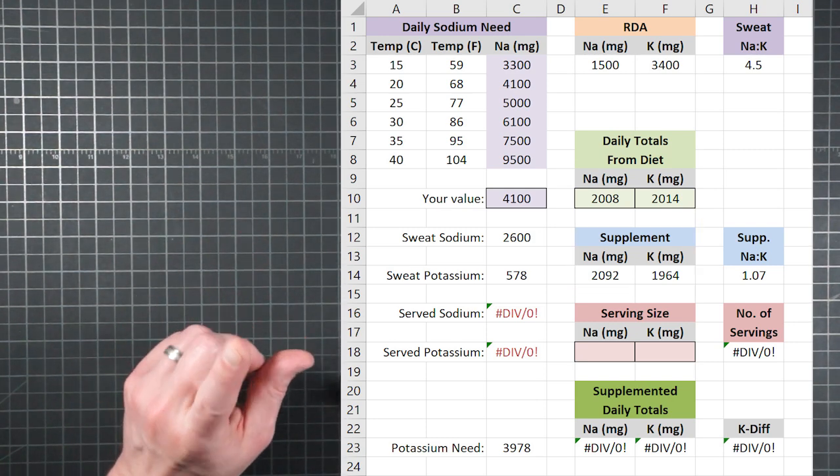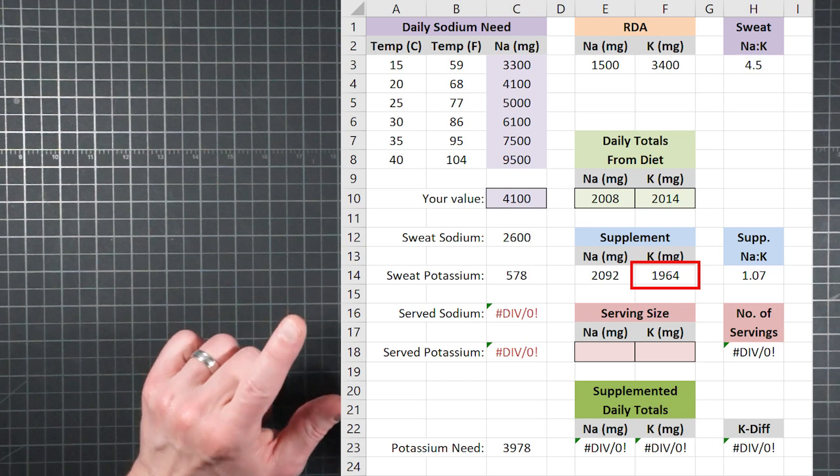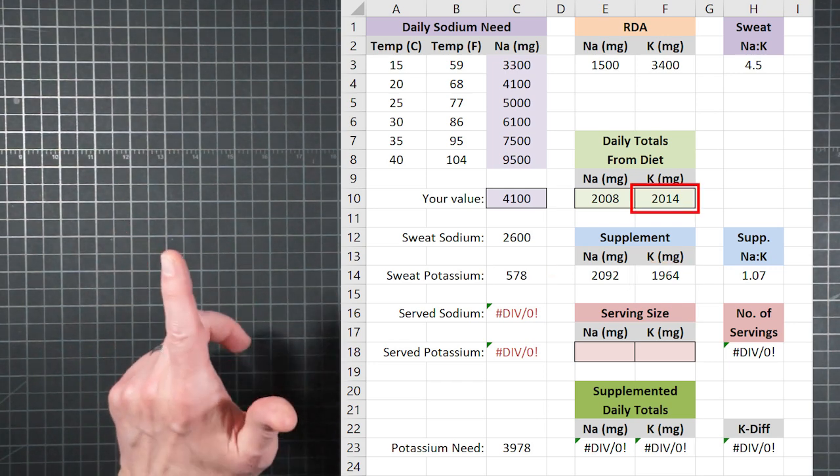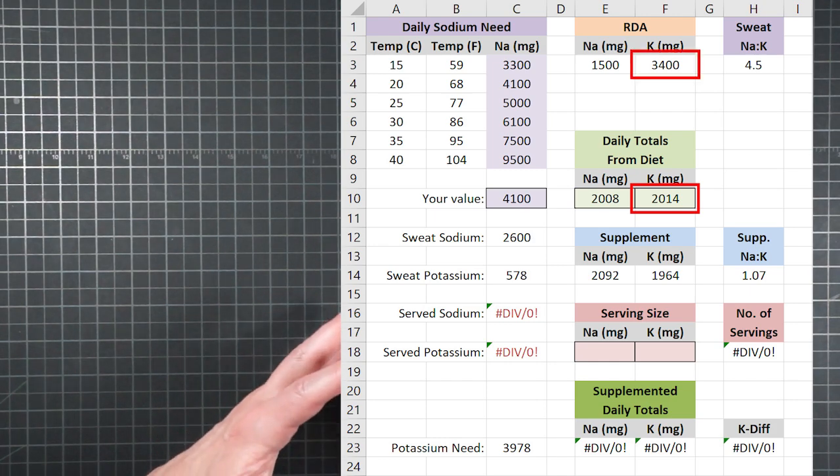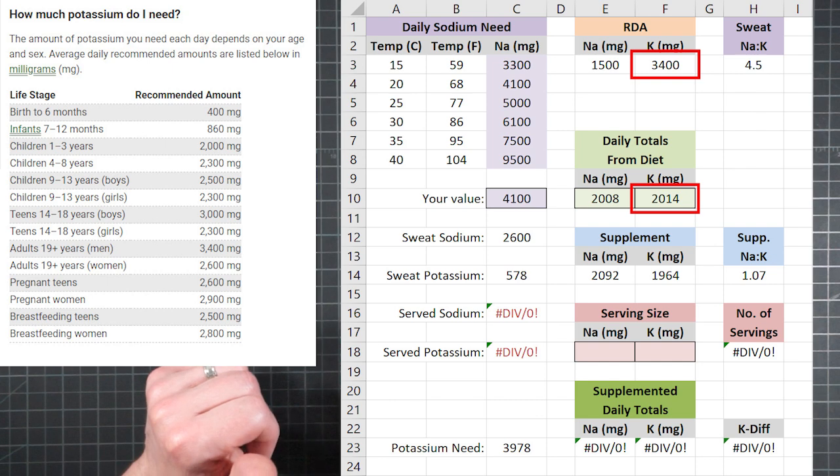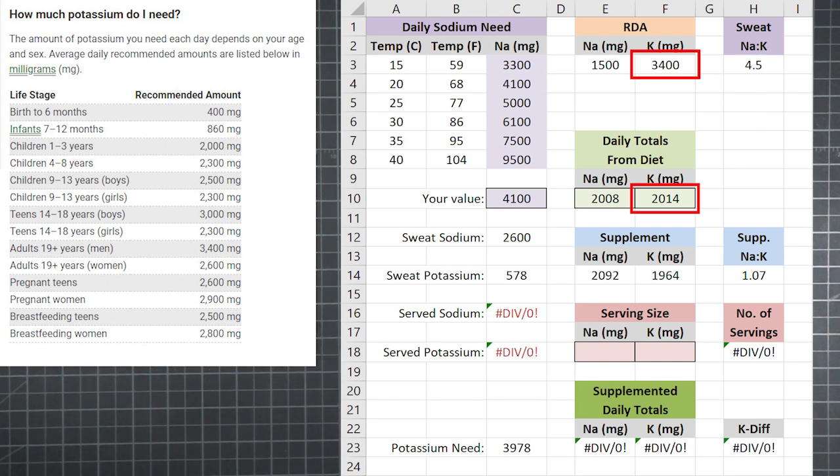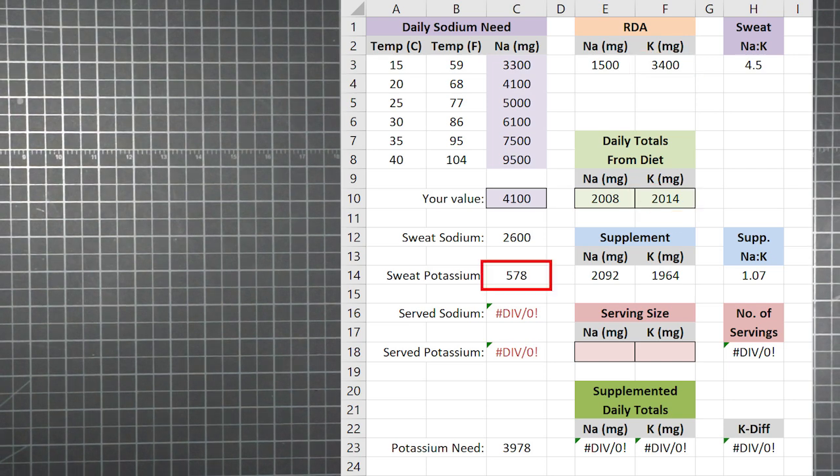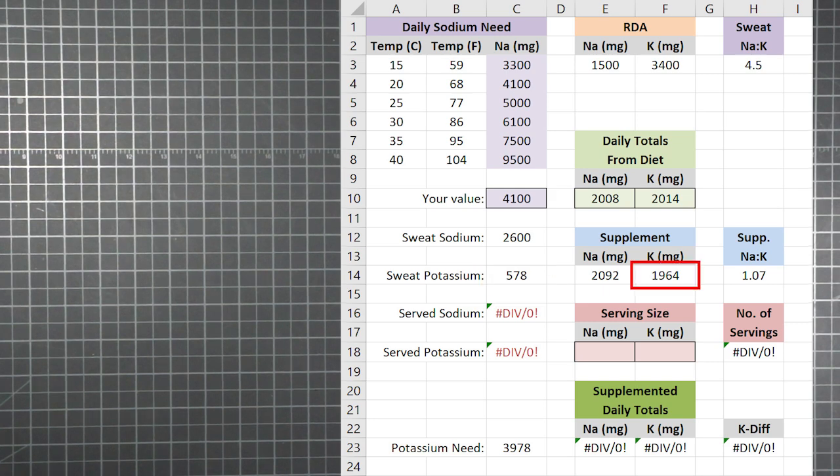You choose a temperature and pick the sodium need and then enter what you're already getting from food. The calculator tells you how much to take in supplements to get in range. You'll notice that the potassium supplement is larger than that loss through sweat. And that's because my potassium from diet is less than the recommended daily allowance assumed here.